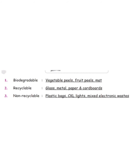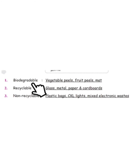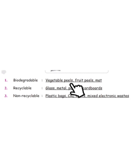Children, page number 70. Some examples of each waste category: Biodegradable waste includes vegetable peels, fruit peels, and mat. Peels means the outer layer of vegetables or fruits.